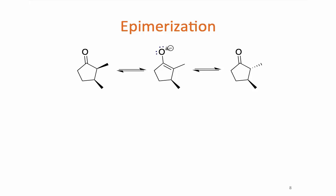The other thing that we're going to talk about in this section is epimerization. Epimers are stereoisomers that differ only in the configuration of one stereocenter, and epimerization is the process of inversion of that stereocenter.